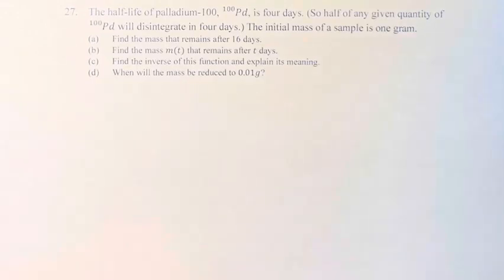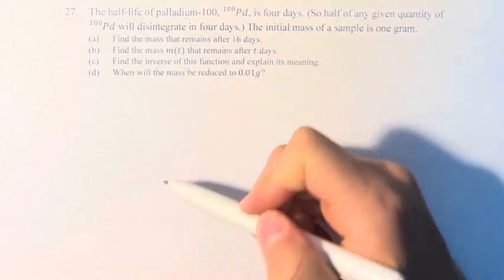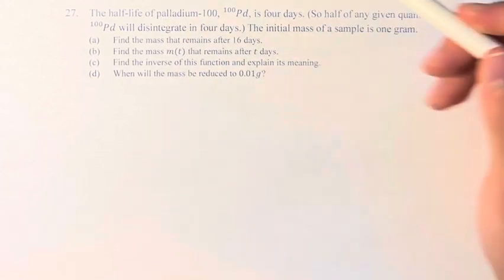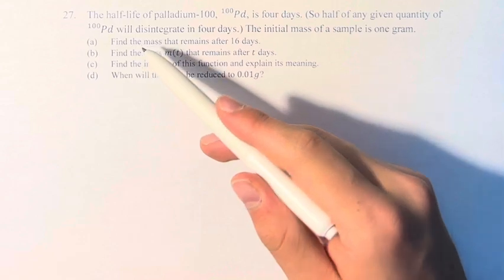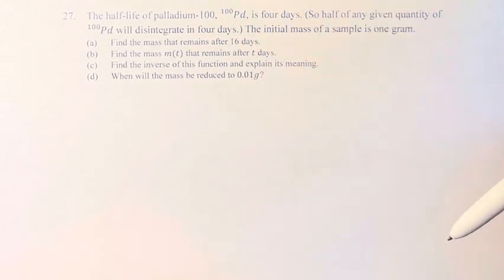Hello, and welcome back to another video. In this problem, we're told that the half-life of palladium-100 is 4 days. So half of any given quantity of 100Pd will disintegrate in 4 days, and the initial mass of a given sample is 1 gram.